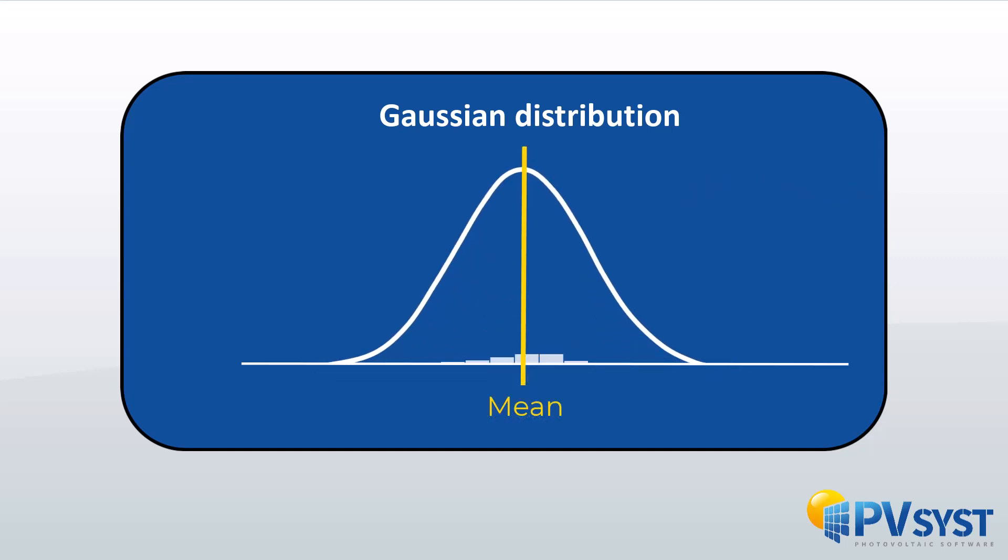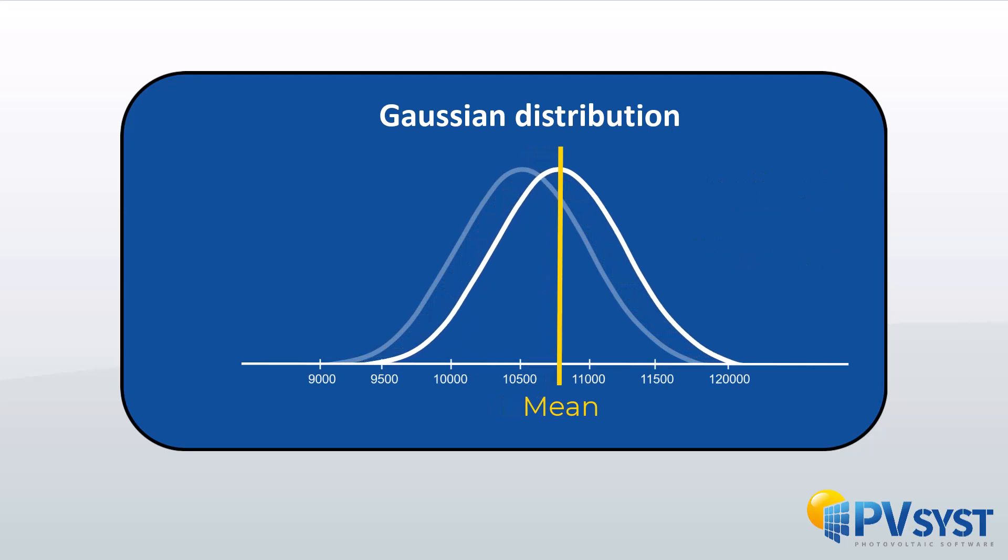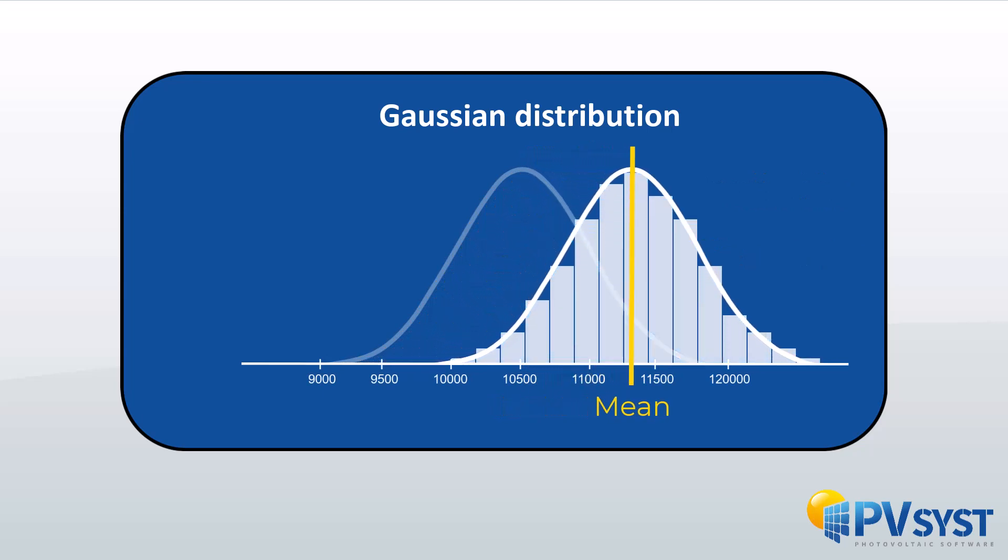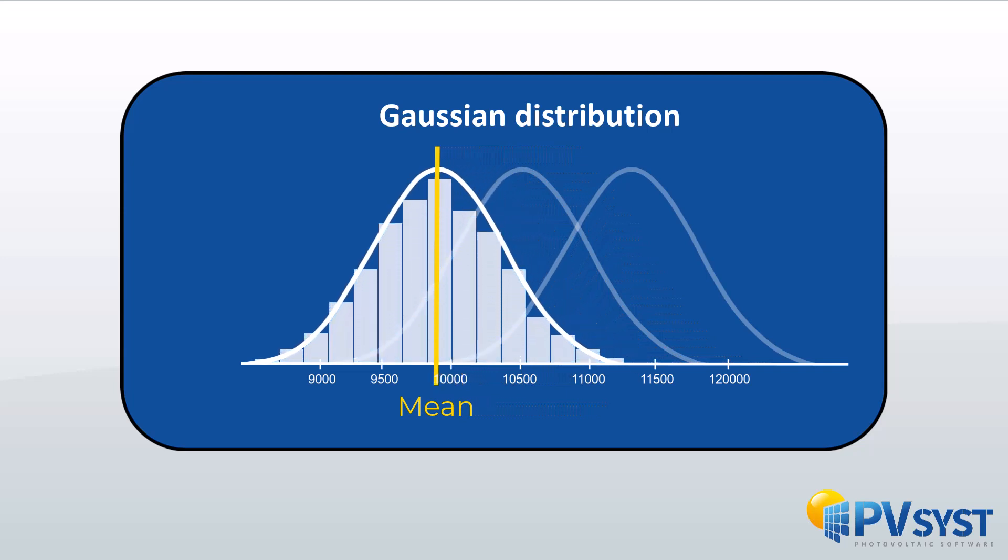So the mean determines the location of the distribution and where the data tends to cluster around. If you increase the mean the curve will follow and move to the right. If you decrease the mean the curve will follow to the left. This happens because the data will always cluster around the mean in normal distributions.